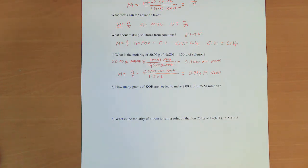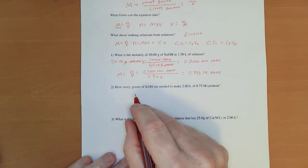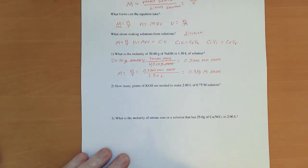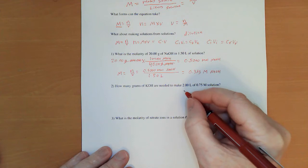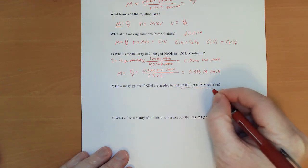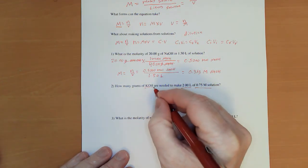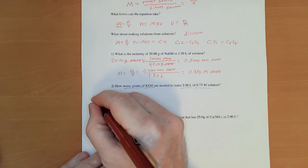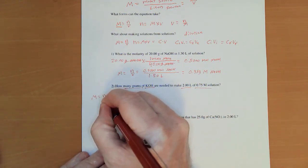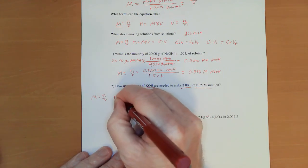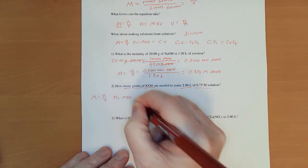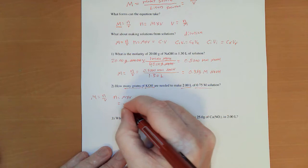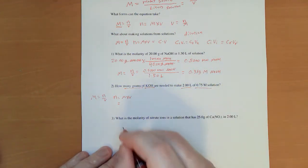Number two is a much more likely question of what you would have to do figuring out how many grams you need to make a specific solution. So, you want two liters of 0.75 molar KOH. How many grams are you going to need? So, if molarity is moles over volume, moles equals molarity times volume.